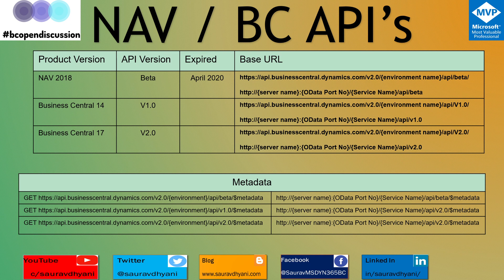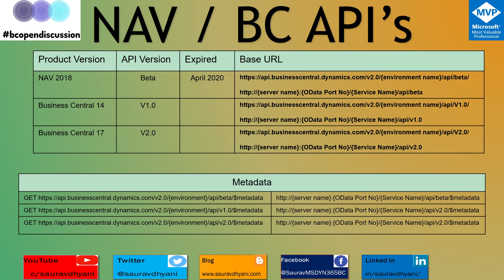For an on-prem customer, the URL would include the server name, your OData port number on your service tier, the service name, and then at the end /API/beta. That's how you would access all the beta APIs available in those versions.